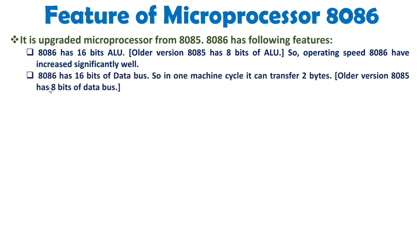With 8086, you will observe it has a 16-bit data bus. Whenever you want to transfer data, it will take only one machine cycle to transfer 16 bits, or two bytes. With the older 8085, it had an 8-bit data bus, so with one machine cycle we were transferring only one byte of data.